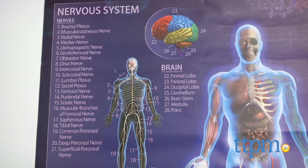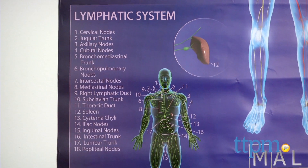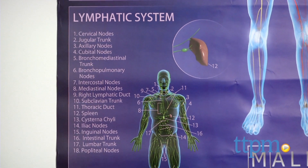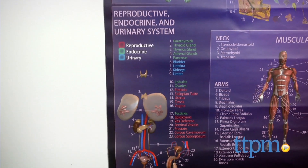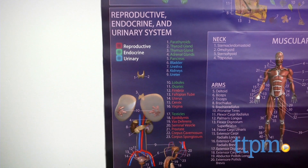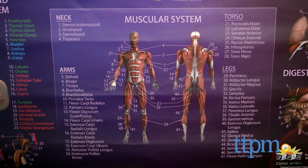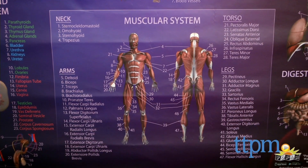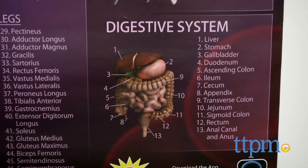The poster includes 9 body systems: nervous, lymphatic, reproductive, endocrine and urinary, muscular, digestive, respiratory, skeletal, cardiovascular and integumentary.